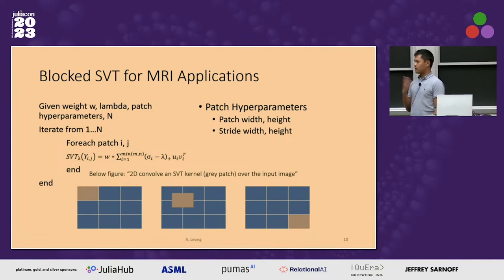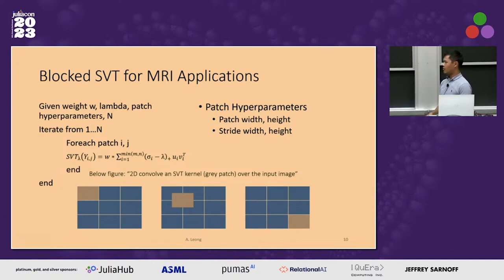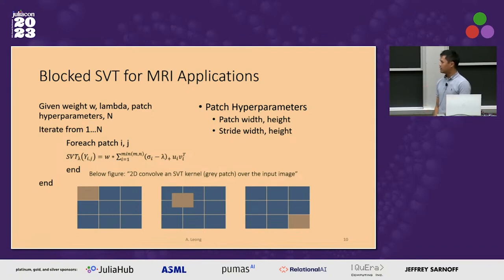Moving on to an iteration of this algorithm. With the SVT, if you denoise too much you get some blurring in the image. What we can do to correct that is the block SVT. We take the SVT of a sub-part of the image, like a patch, and then apply SVT across the image, potentially overlapping the patches as we move over the image. That formula describes iterating for each patch, and it's a weighted sum of the patches — the more we patch up, we divide by the weight. On the right are the hyperparameters you can play around with.